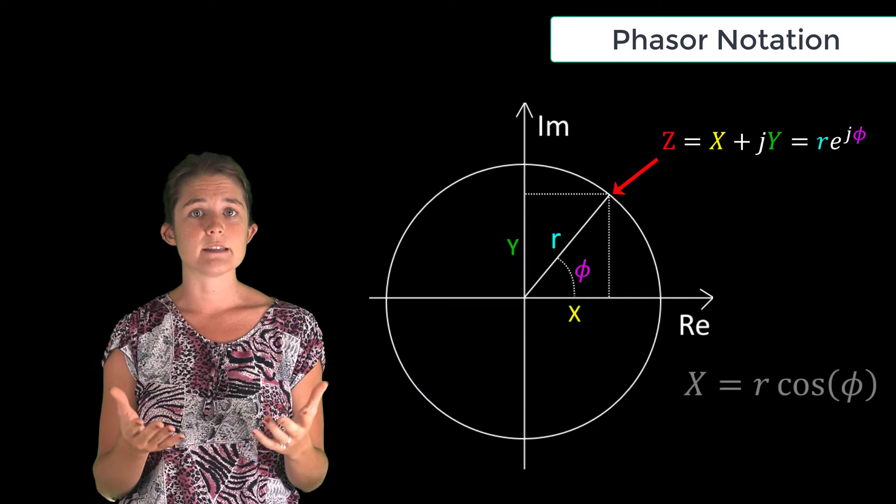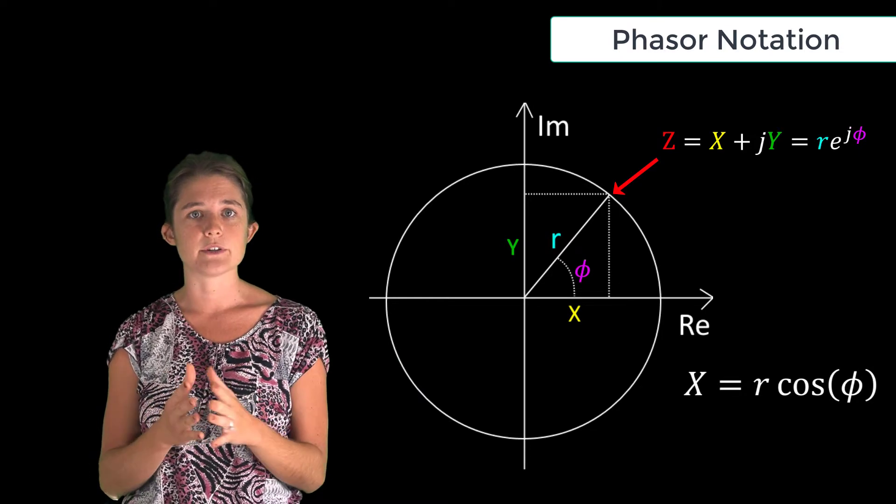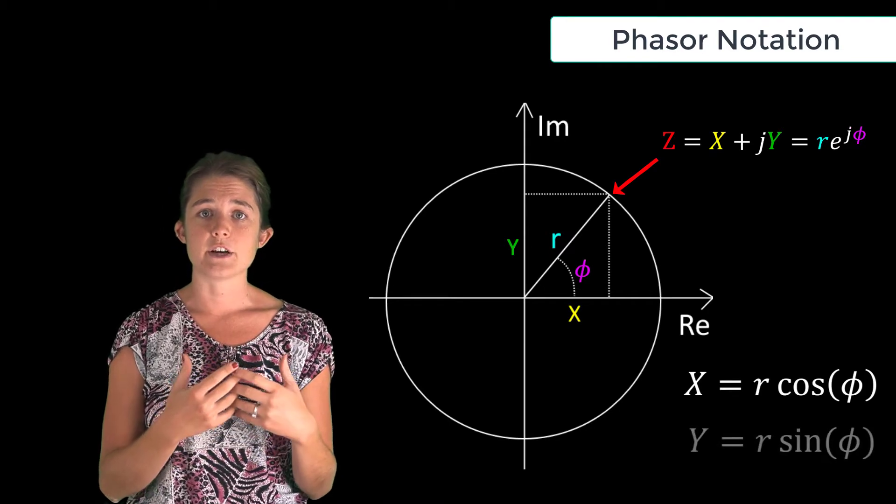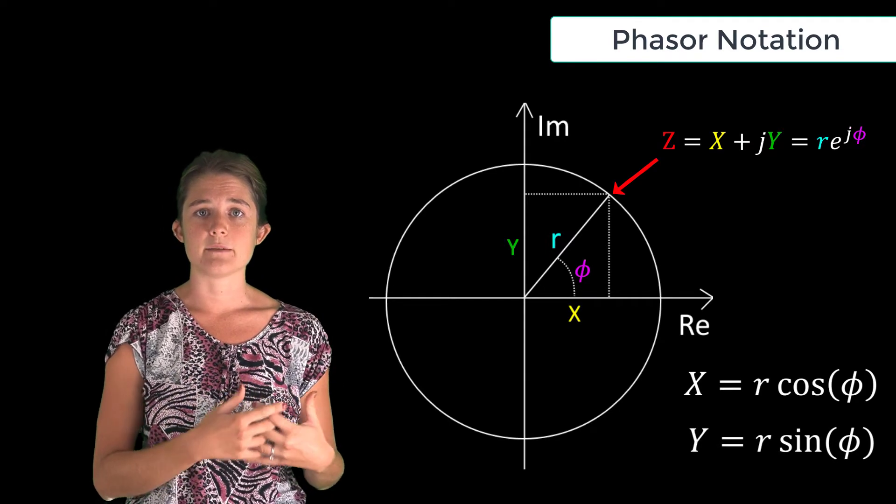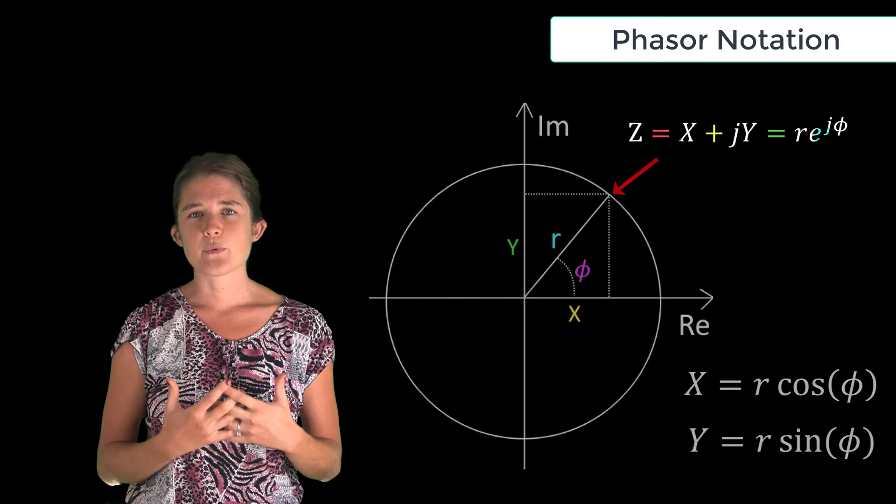By the simple geometry of the plot, you can see that the real part x will be equal to r times the cosine of phi, and the imaginary part y will be equal to r times the sine of phi.